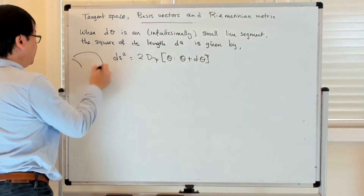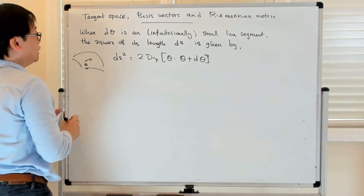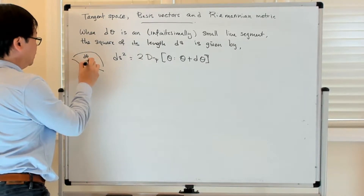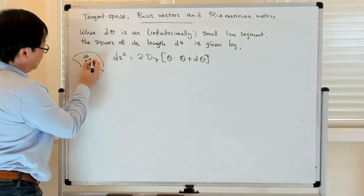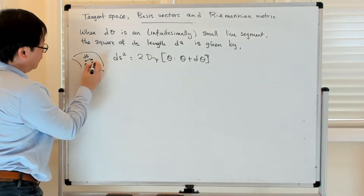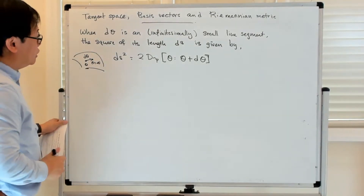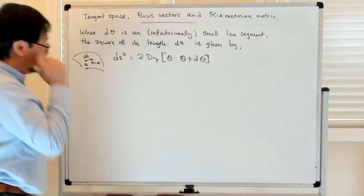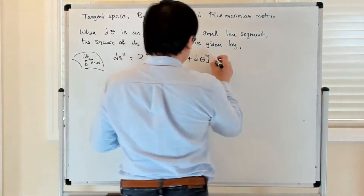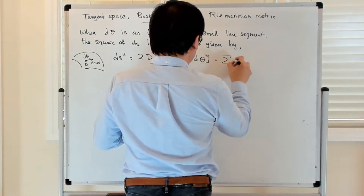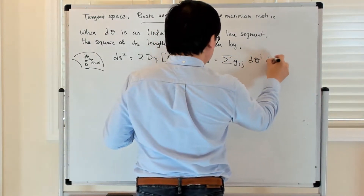The picture to have in mind is that there's a point θ, an infinitesimal line segment dθ, and you add those two things together — θ plus dθ — giving you two points on this manifold. You then apply two times the Bregman divergence to that. This turns out to equal the sum of g_ij dθ^i dθ^j, summing over i and j.